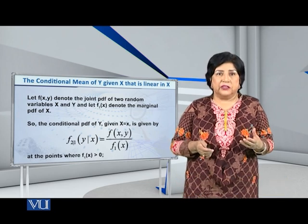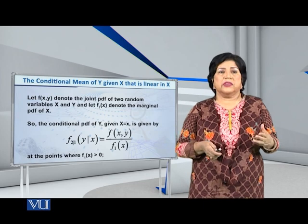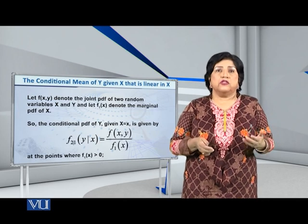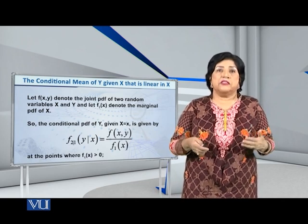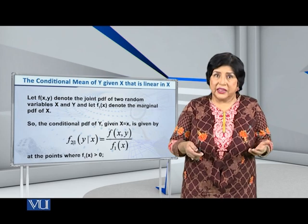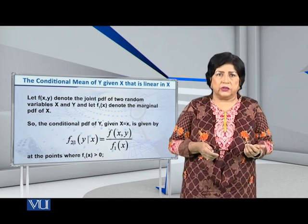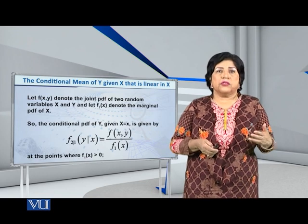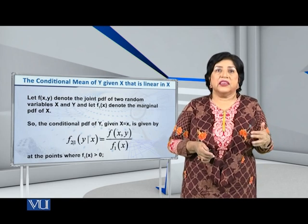Suppose that we have a bivariate density function, f(x,y), the joint PDF of two random variables X and Y, which are continuous random variables, and we denote the marginal PDF of X by f₁(x), so that the conditional PDF of Y given X equal to small x is given by f₂|₁, this is a notation as you can see on the screen: f₂|₁(y|x) is equal to f(x,y) divided by f₁(x), at those points where f₁(x) is greater than 0.